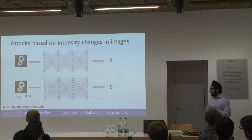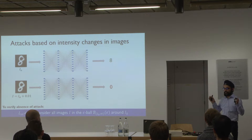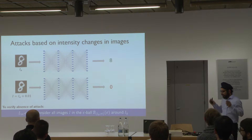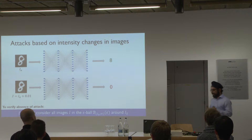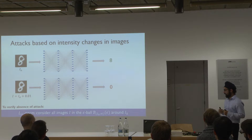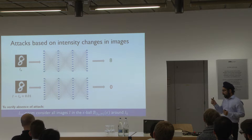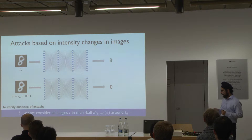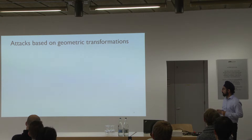What people do is take a test input and define an adversarial region around it. You take an original image — say, the digit 8 — and consider all images that can be constructed by adding a small amount of noise. The common metric is the L∞ norm: given a radius ε, you consider all images obtained by adding noise less than ε to any pixel. This search space is usually very large, making it impossible to enumerate all images. You can also have other kinds of attacks based on geometrical transformations.